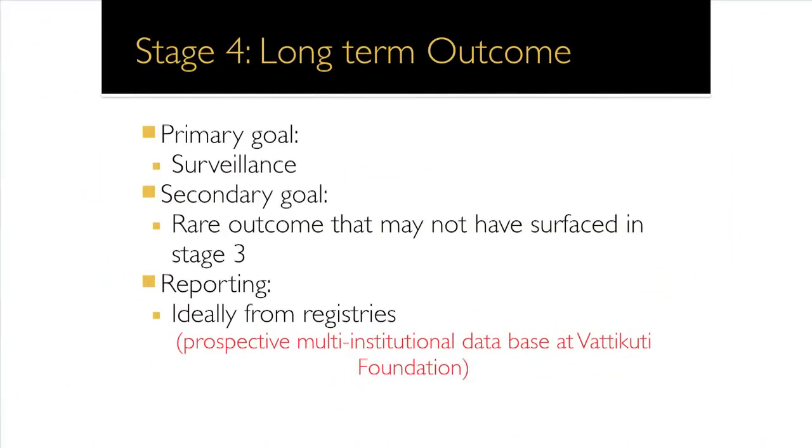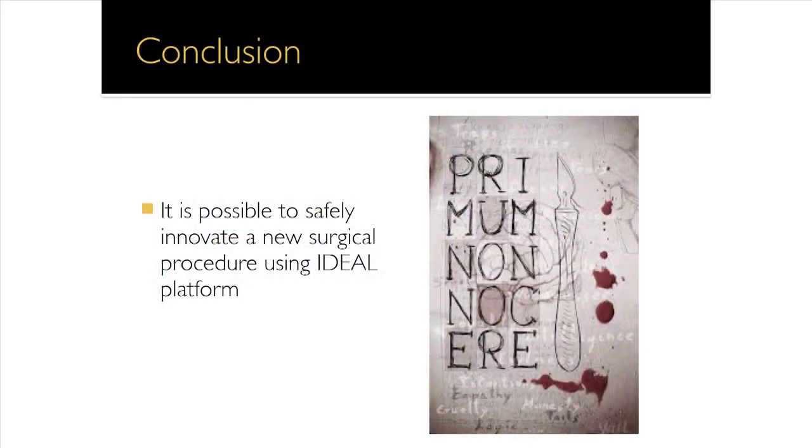The last phase of IDEAL is Long-term outcomes. The primary goal is surveillance; the secondary goal is to report rare outcomes not captured in earlier stages. Reporting is ideally done through registries. We have a prospective multi-institutional database at the Vattikuti Foundation with 178 different observation points currently being populated. There is also a European registry of robotic transplant led by Dr. Breda from Barcelona, allowing long-term outcomes to be compiled and reported from both registries.